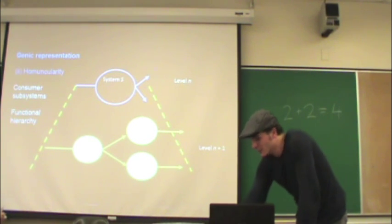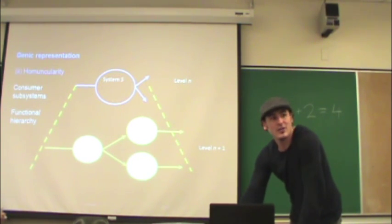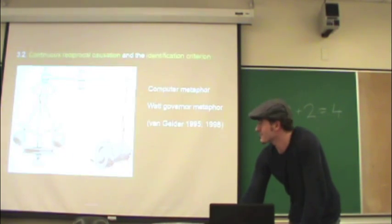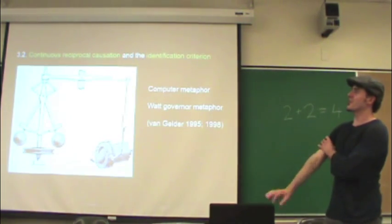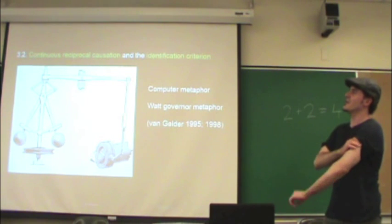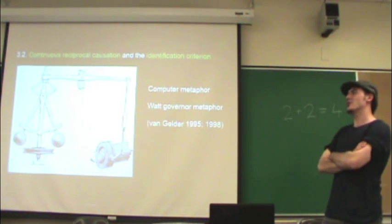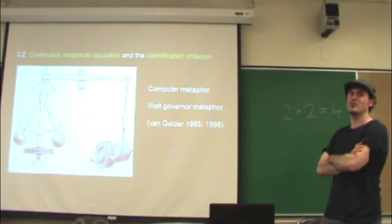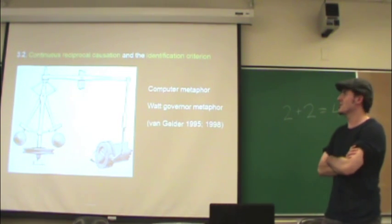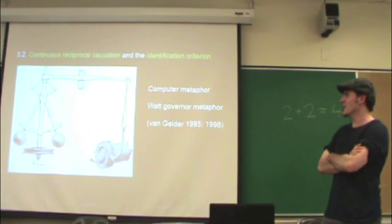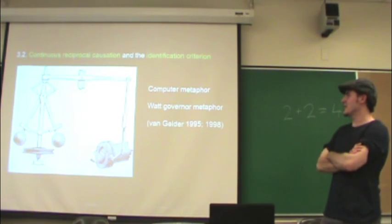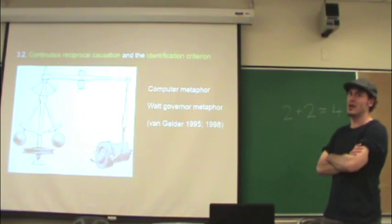So much for the first objection. The second objection is a little more serious because it undermines not only our capacity to attribute causal responsibility to representations but also our capacity to identify representations at all. Timothy Van Gelder in 1995 and 1998 proposed a dynamical conception of the brain. Van Gelder argued that the computer metaphor may not be working and proposed a different metaphor for the mind: the Watt governor.